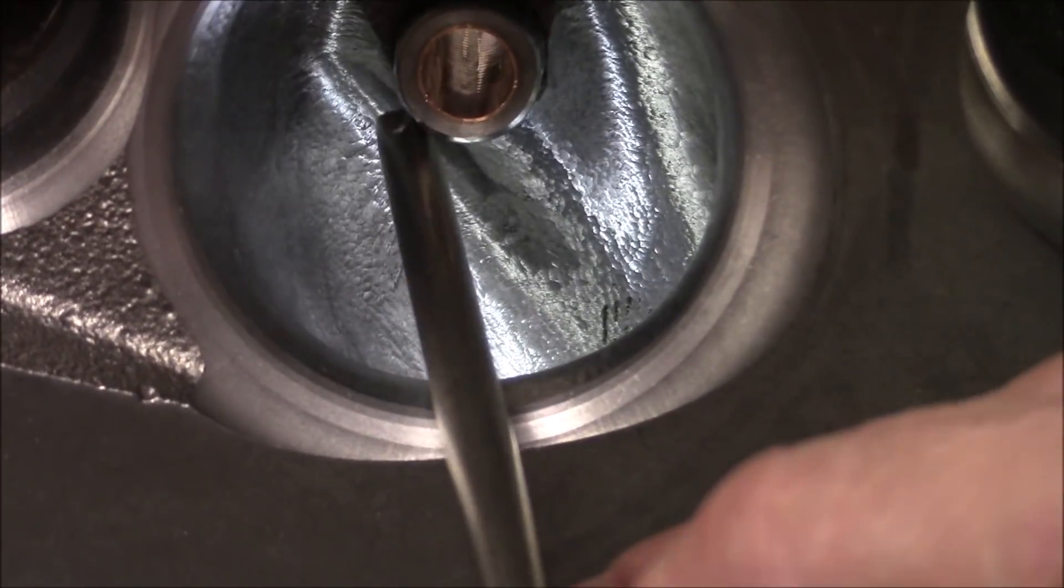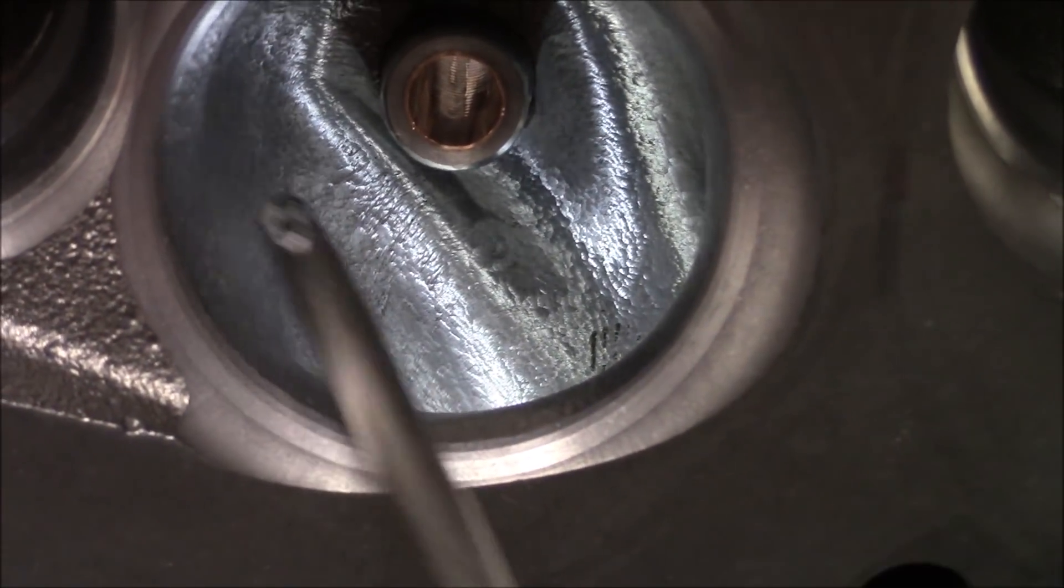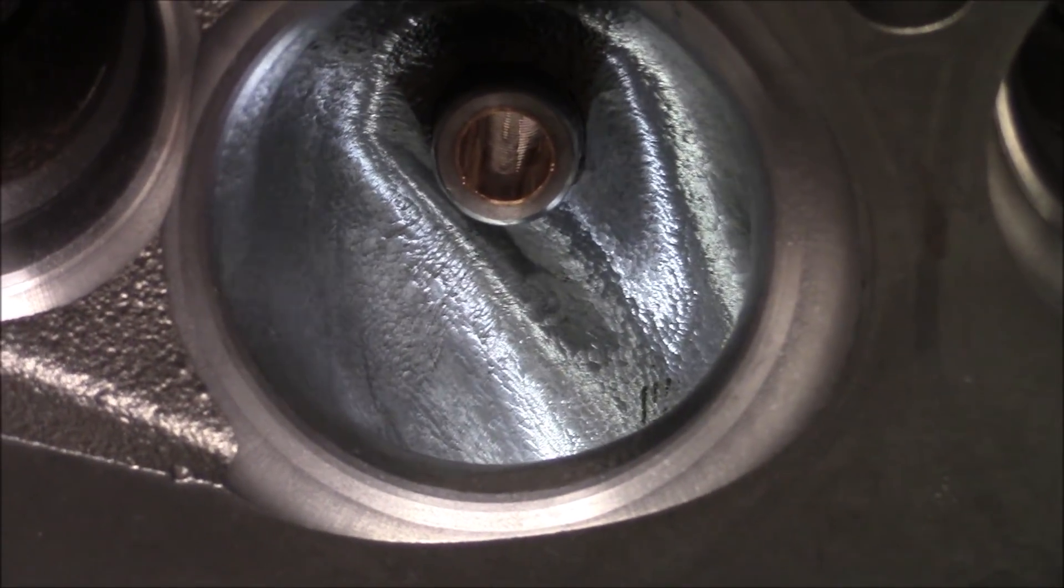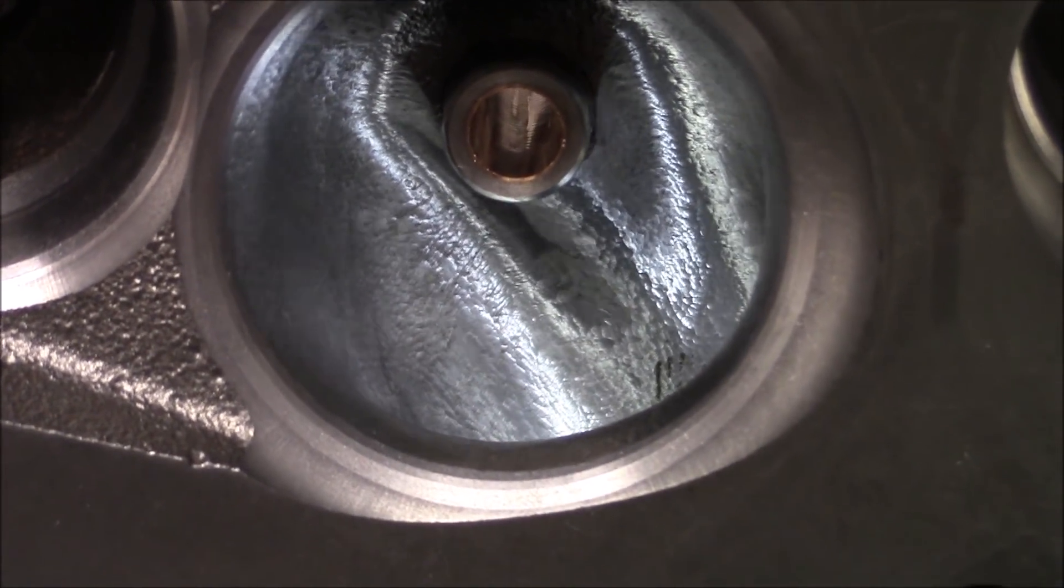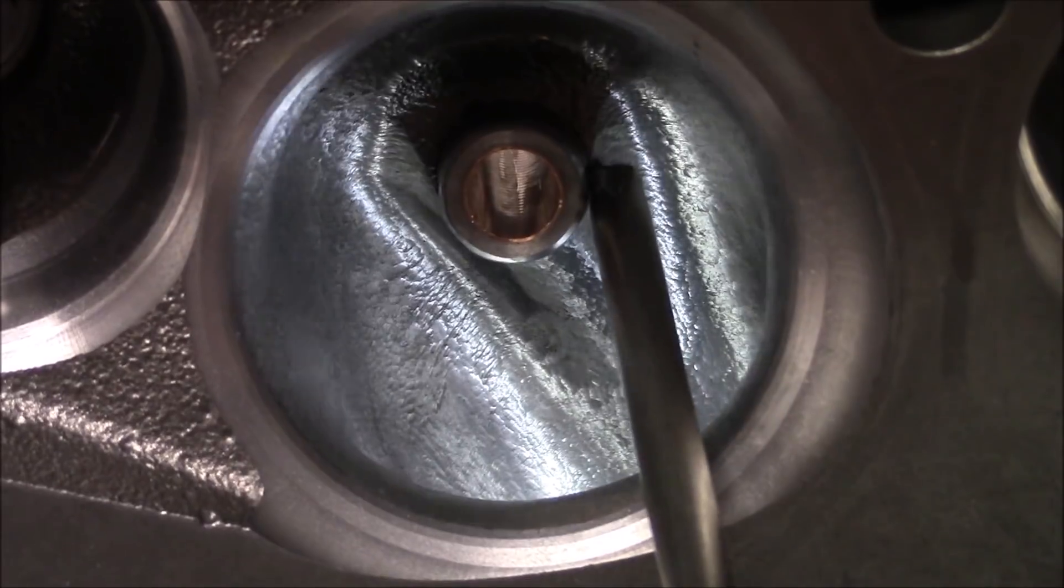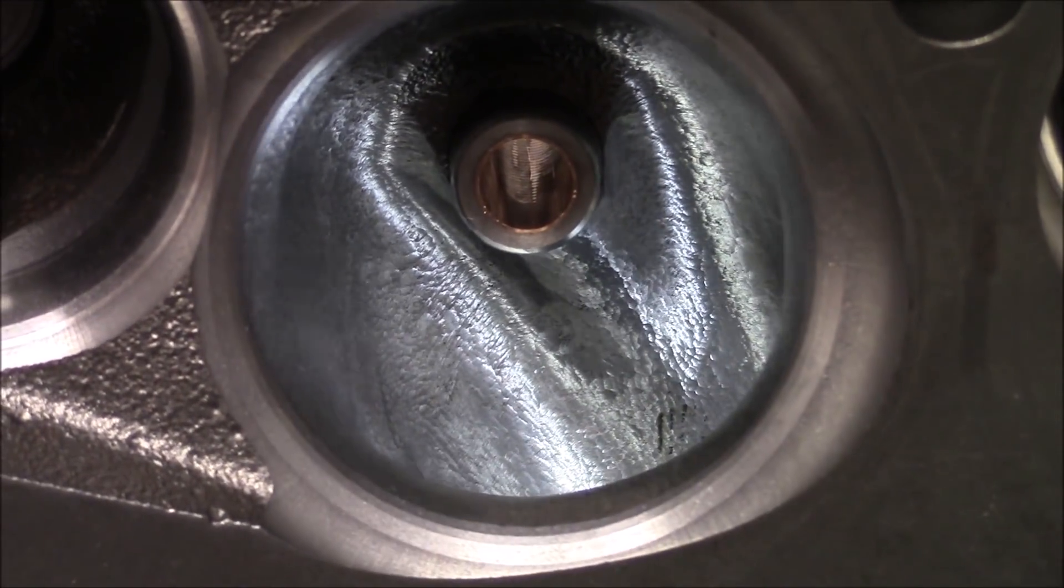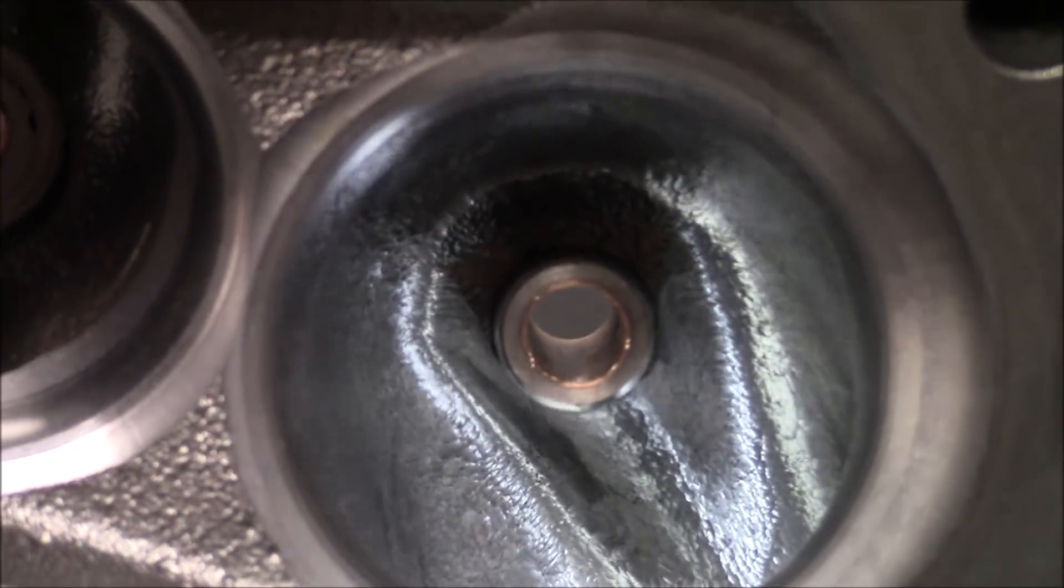Now, from the guide boss to the top of the bowl, on the left hand side we've opened it up about 75 thousandths. Then on the right hand side of the bowl to the valve guide, we've opened it up 70 thousandths roughly.